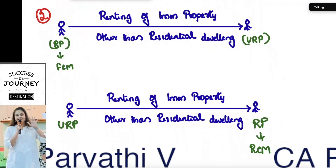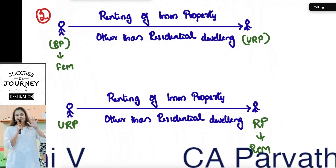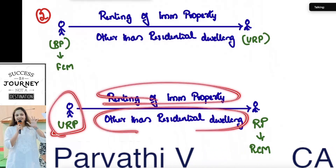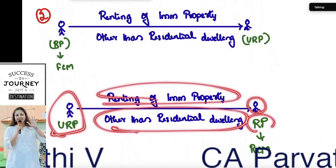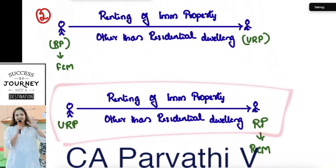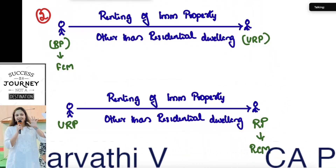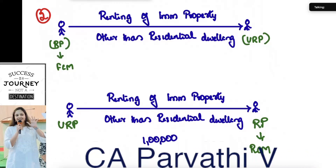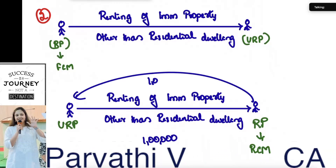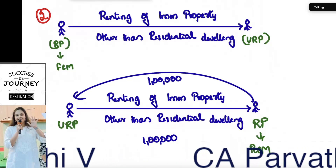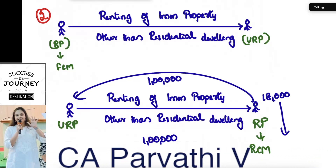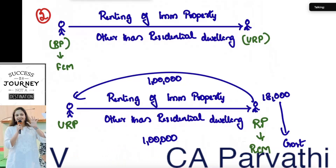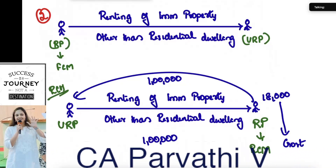The third situation: the supplier is an unregistered person, it is renting of immovable property other than residential dwelling, and the recipient is a registered person. This is the entry which comes under RCM. In this case, if the supplier is charging a rent of 1 lakh rupees, the recipient will pay only 1 lakh to the supplier, and on this amount GST of 18,000 will be directly paid by the recipient to the government under RCM. This is the RCM entry.